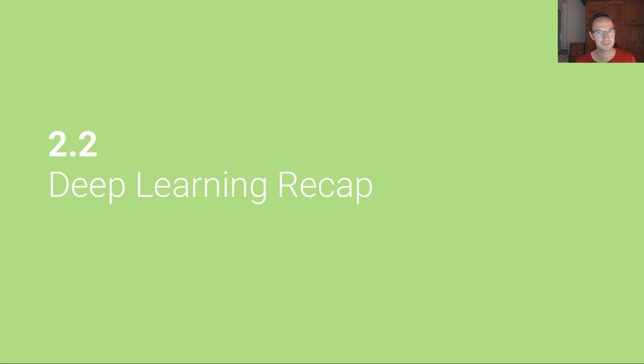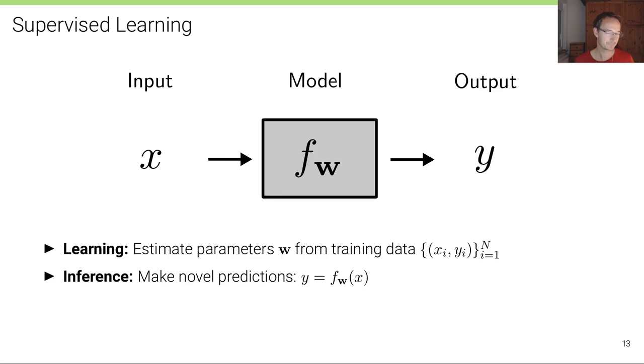Deep learning is essential for many of the algorithms discussed in this class. While deep learning is a prerequisite for this course, it's a good idea to do a little recap. This recap is basically a summary of the first seven lectures of our deep learning lecture at the University of Tübingen, heavily condensed into 40 slides, so we're going to be rather quick. If you need to look into these materials more closely, I recommend having a look at our lecture.